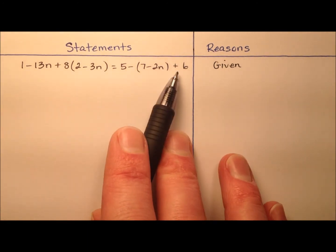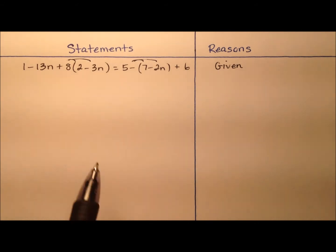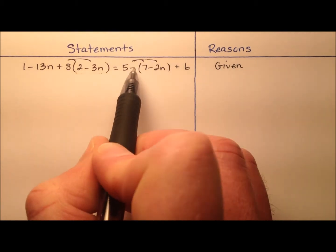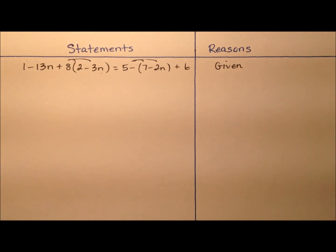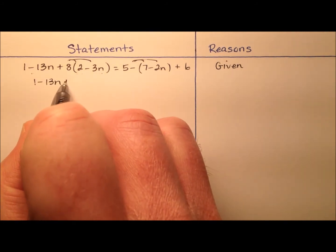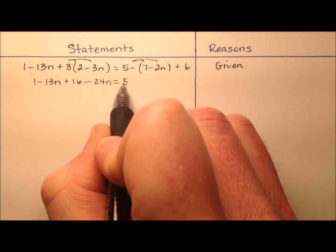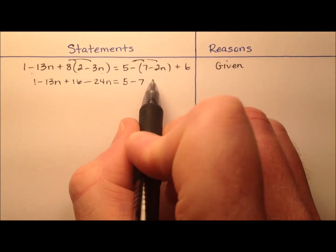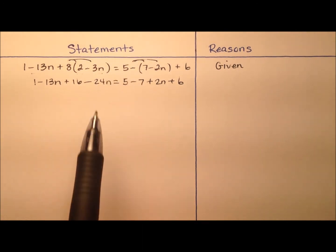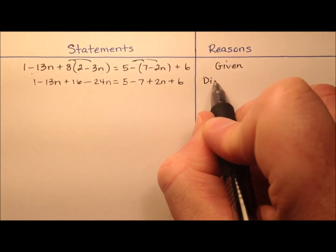This equation has been given to us and it has some parentheses, so let's start by distributing to get rid of those. It's a positive 8 distributing across the first binomial, and a minus one distributing across the second. So: one minus 13n, then 8 times 2 is 16, 8 times negative 3 is negative 24n. On the other side, 5 minus — negative one times 7 is negative 7, and negative times negative makes positive 2n plus 6. This is now simpler, and the reason is the distributive property.